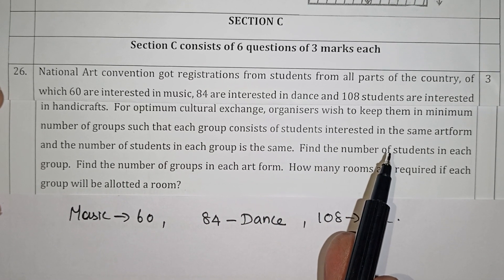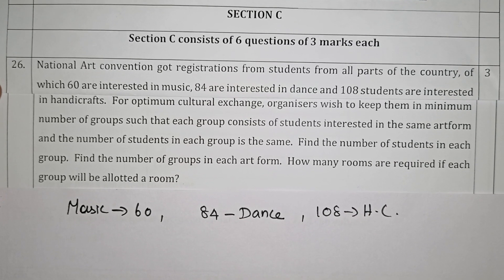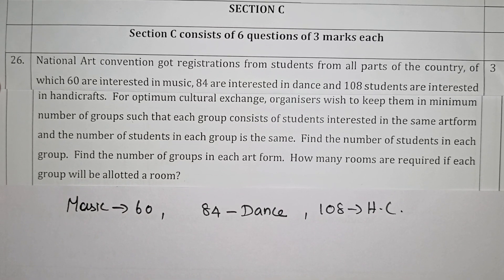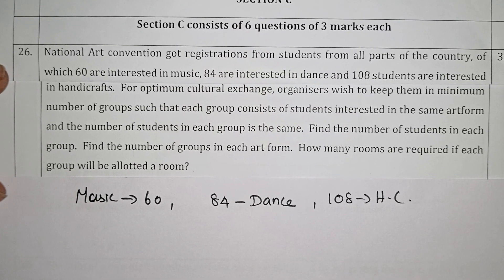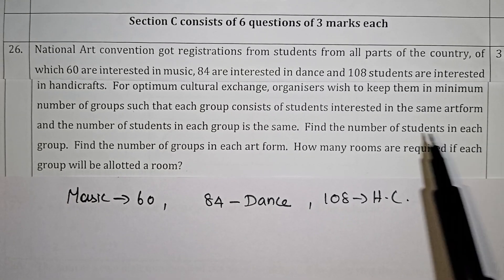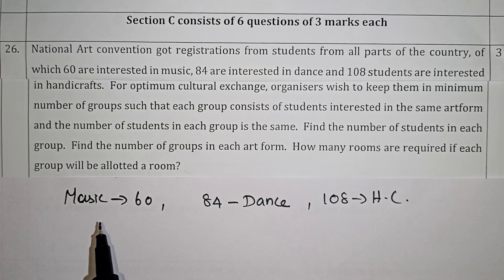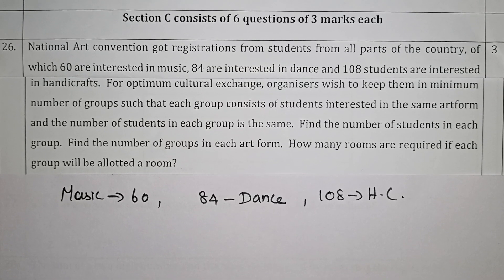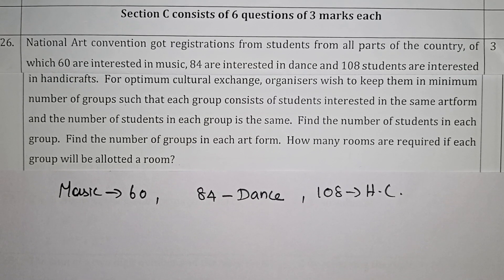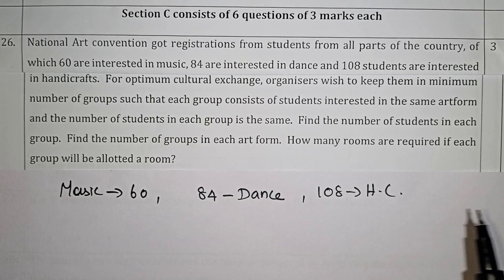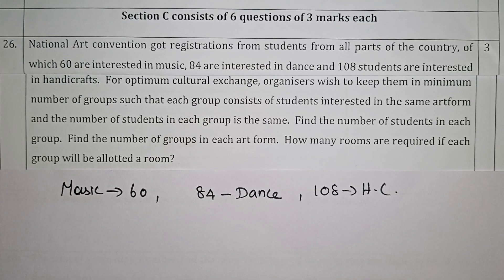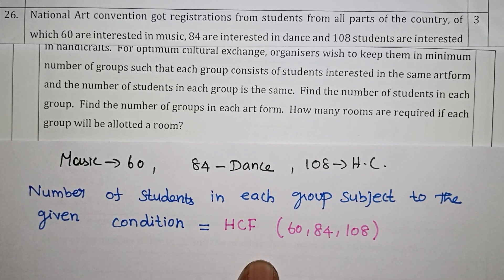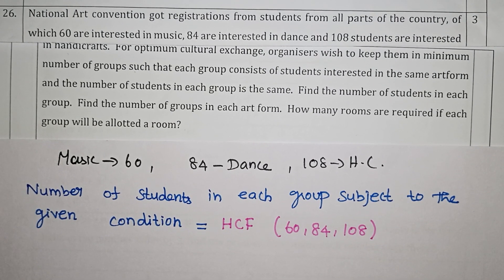For optimal cultural exchange, the organizers wish to keep them in the minimum number of groups such that each group consists of students interested in the same art form, with equal numbers in each group. To find this, we can use HCF — divide the three numbers.